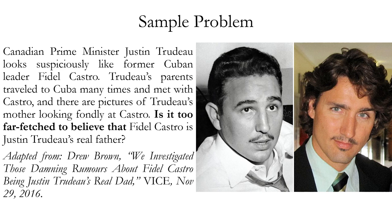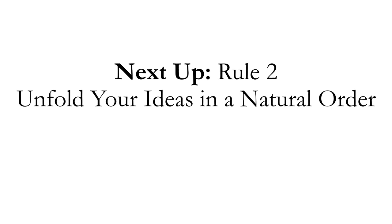Now that we have the indicator phrase, we can identify the conclusion: 'Fidel Castro is Trudeau's real father.' And this conclusion helps us identify the premises. Looking at each preceding sentence: 'Prime Minister Trudeau looks suspiciously like former Cuban leader Fidel Castro' — the side-by-side picture shows some resemblance. 'Trudeau's parents traveled to Cuba many times and met with Castro, and there are pictures of Trudeau's mother looking fondly at Castro' — these count as premises because they try to help prove that conclusion. That's it for Rule 1. Next up is Rule 2, 'Unfold your ideas in a natural order,' which is about how to present an argument in standard logical form.